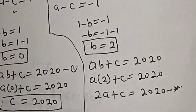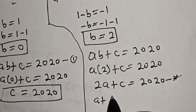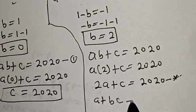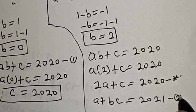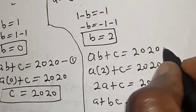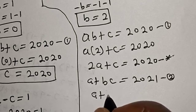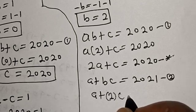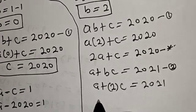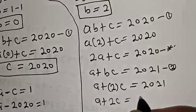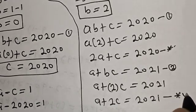Then equation 2 is (A + B)C is equal to 2021, so A plus 2 times C is equal to 2021. This gives us A plus 2C is equal to 2021. Let's call this equation double-star.